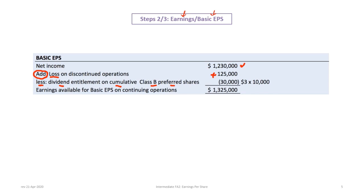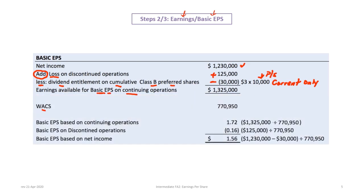We always deduct dividend entitlements on cumulative preferred shares. There are two classes: Class A is non-cumulative and Class B is cumulative. Because Class A is non-cumulative and no dividend was declared, we don't include anything for it. Class B is cumulative — it doesn't matter if dividends are in arrears, only current year dividends count. We have 10,000 preferred shares paying a $3 dividend, so we subtract $30,000, giving us earnings available for basic EPS on continuing operations of $1,325,000.